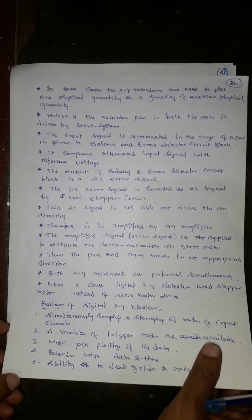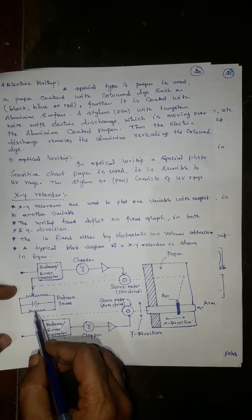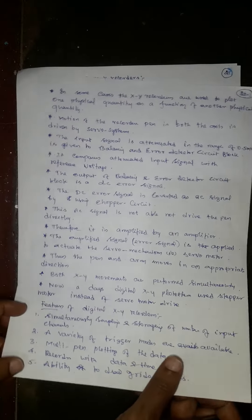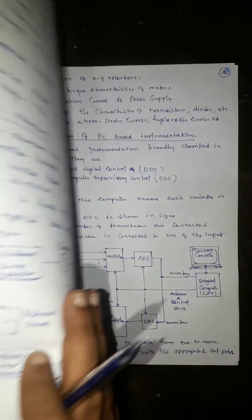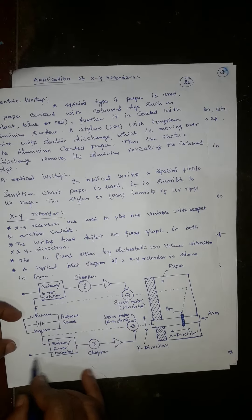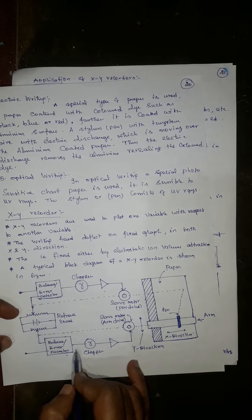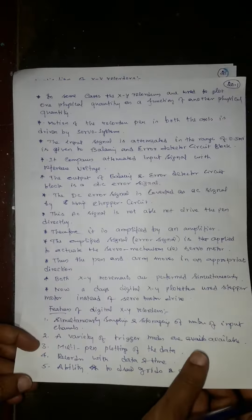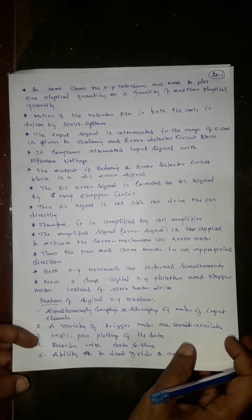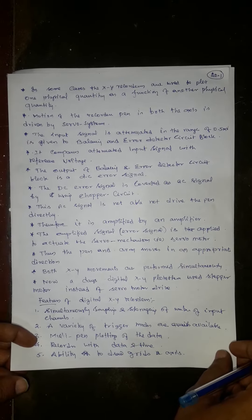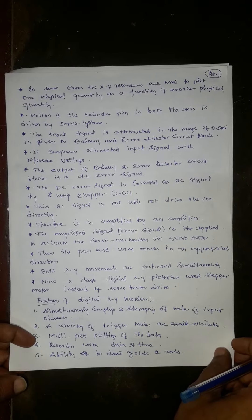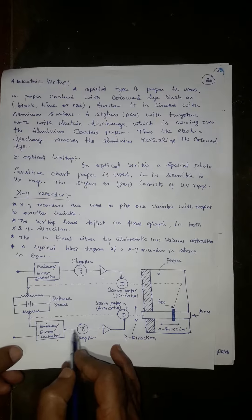The balance or error detector circuit compares the attenuated input signal with the reference voltage. In the balance error detector, we have a reference source and the attenuated input signal. These are compared and an error signal is generated. The output of the balancing and error detector circuit is a DC error signal.